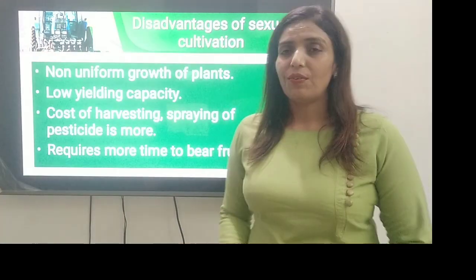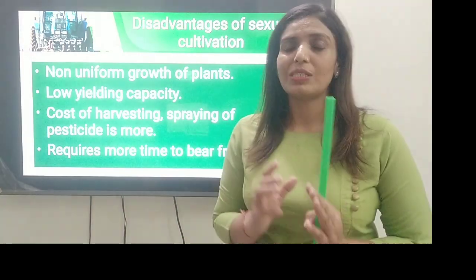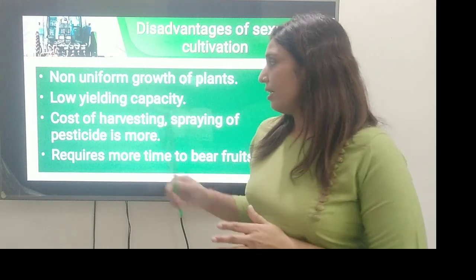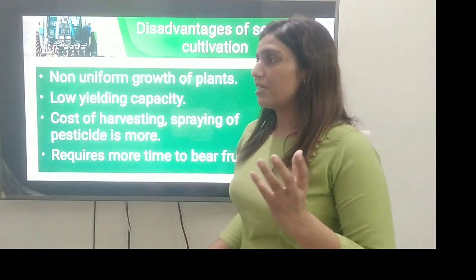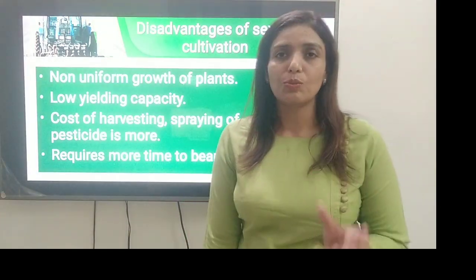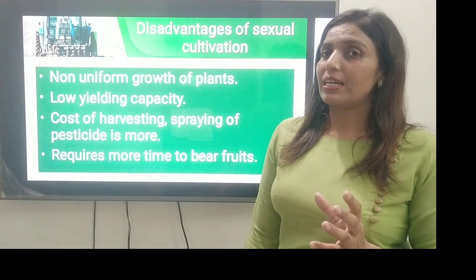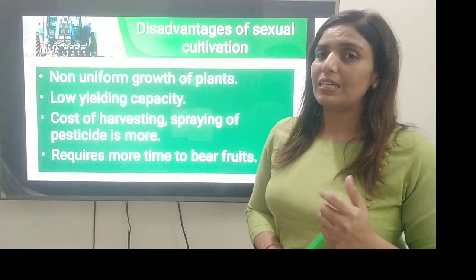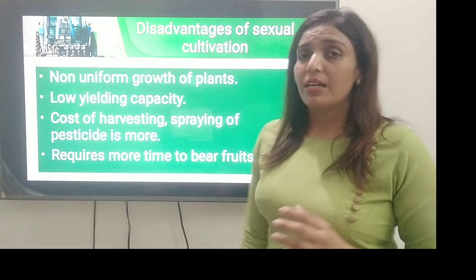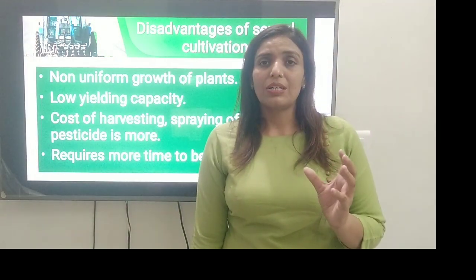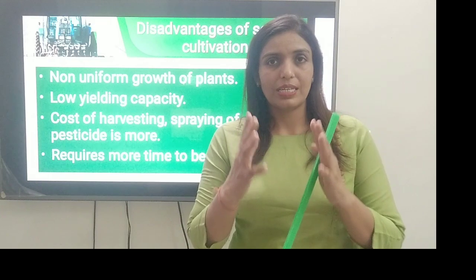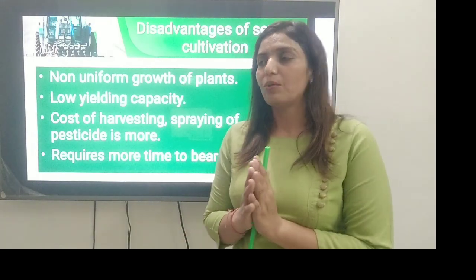Disadvantages of sexual cultivation: first is non-uniform growth of plants — मतलब इसमें plants की growth uniform नहीं होती, वो variable होती है. Low yielding capacity — जो yield है वो low होती है. Cost of harvesting — spraying of pesticide is more, जब harvest करते हैं तो pesticide spray की cost बहुत ज़्यादा होती है. Require more time to bear fruits — sexual cultivation में जो fruits आने में बहुत time लगता है, but जो fruits आते हैं वो बहुत heavy होते हैं.